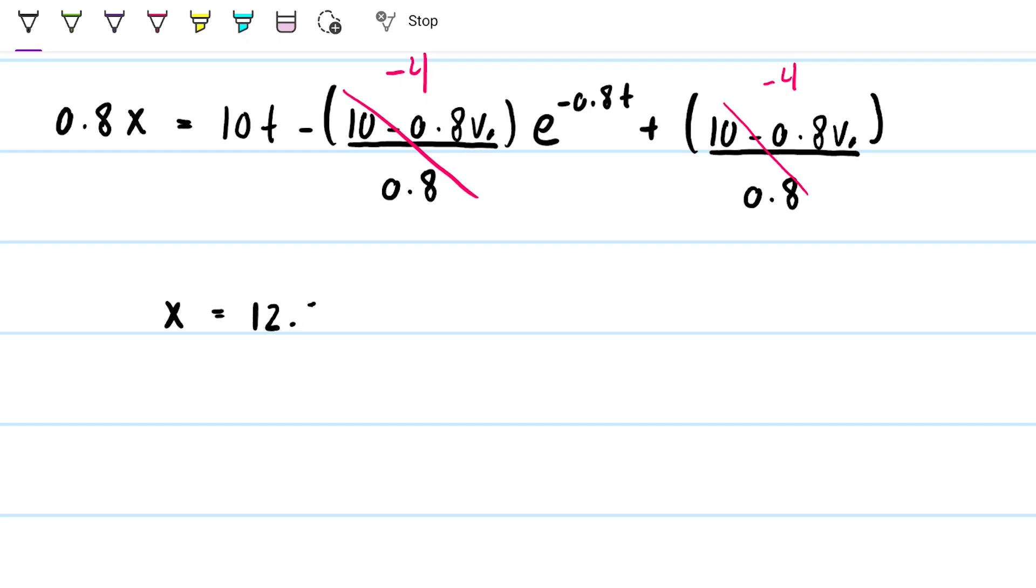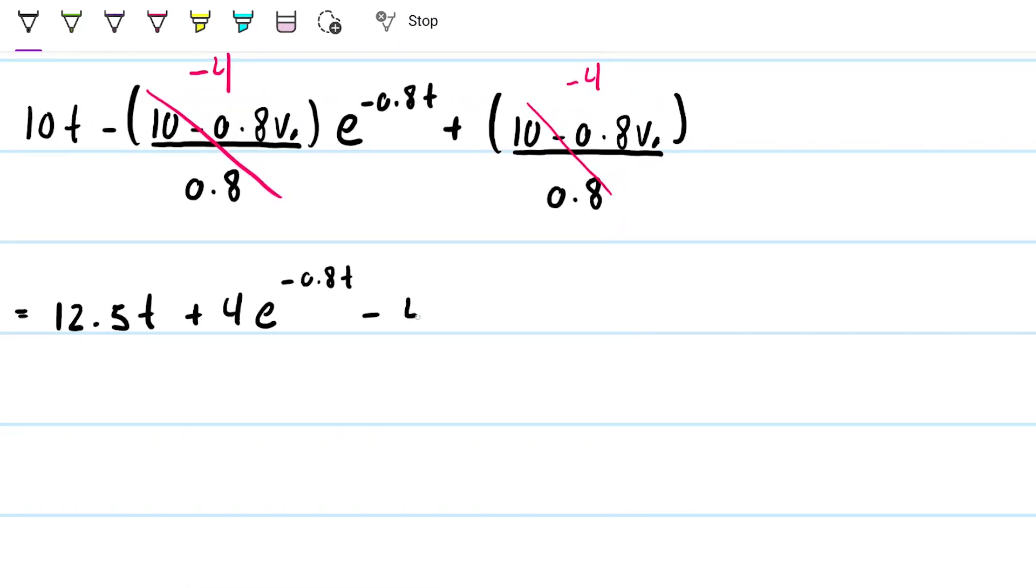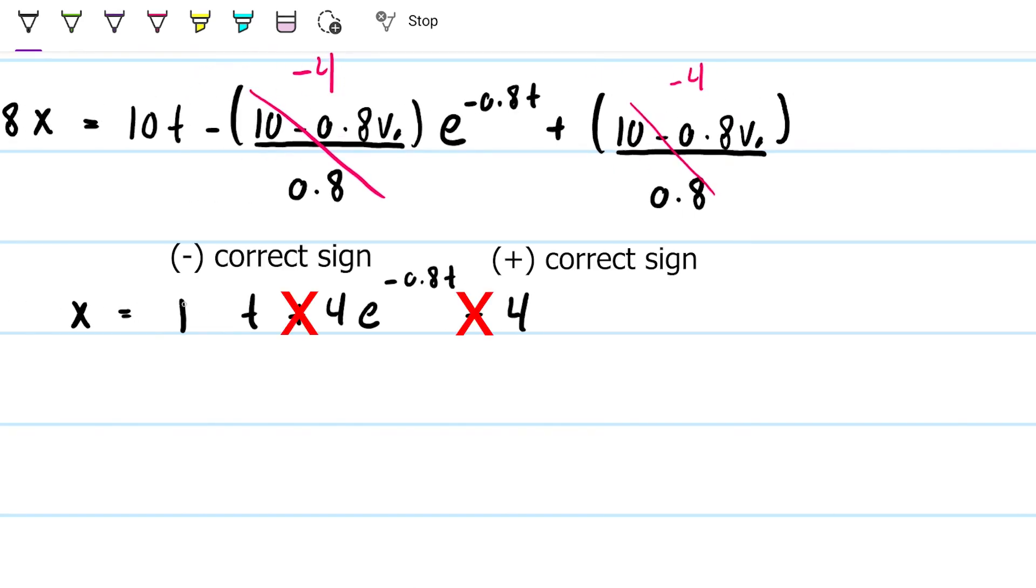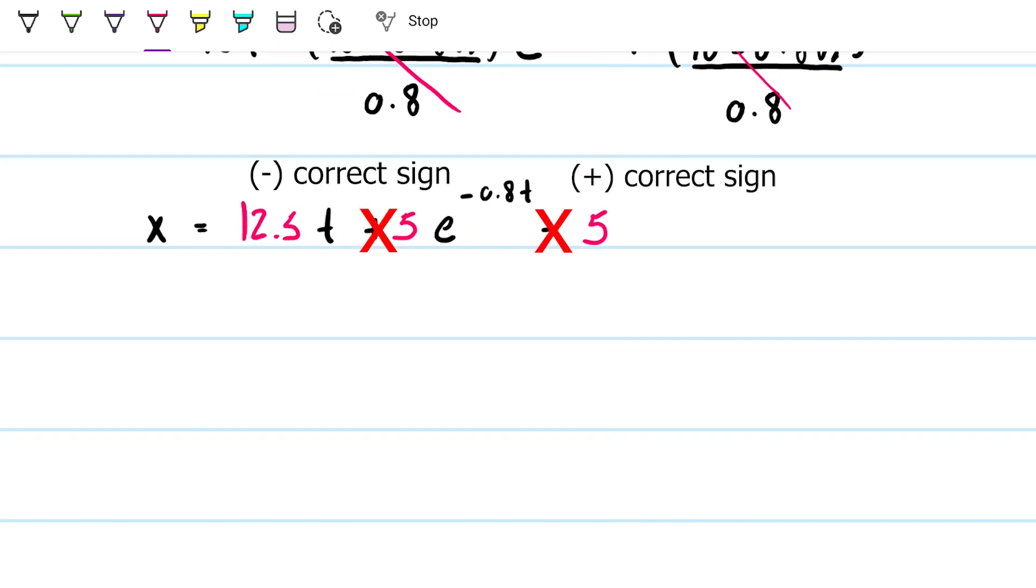X will be equal to 10. So that's going to be 12.5, 12.5t. Negative, negative. It's going to be positive. Positive 4 times e to the minus 0.8t minus 4. Then I need to divide this by 0.8. This becomes 12.5. This becomes 5. And this becomes 5. Yeah, this is as simplified as we can do, I think. All right, so this is an equation that pretty much defines the position of the ball in respect to the x-axis, which is the vertical axis in this case, because we said so, for any time that I want.